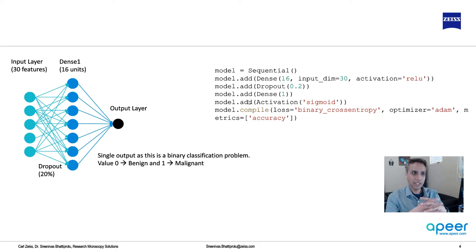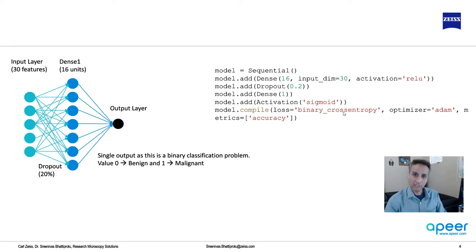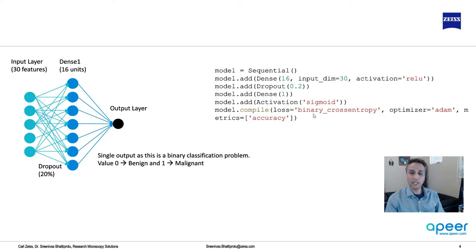Once we define the layers, we need to compile all of these. We are compiling using binary cross-entropy loss. I briefly talked about loss functions — for linear regression, mean squared error is a loss function. Whenever we modify our model, we look at whether the error between the predicted value and actual value is decreasing. The loss function is the metric we look at every time we fit the model.